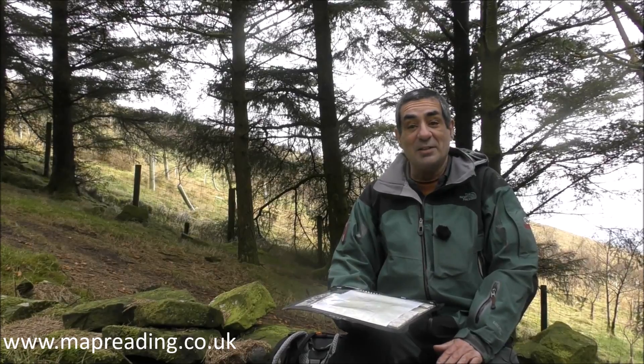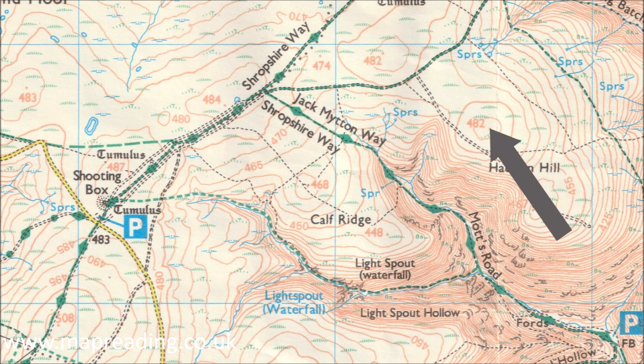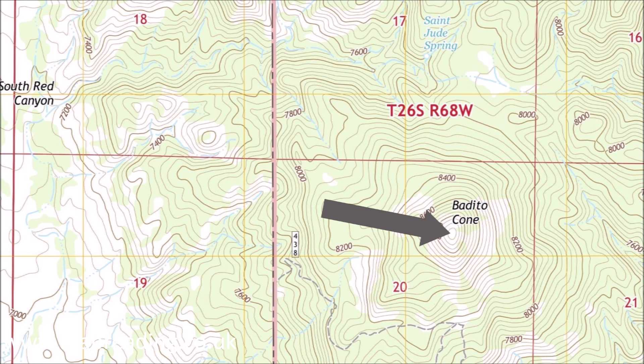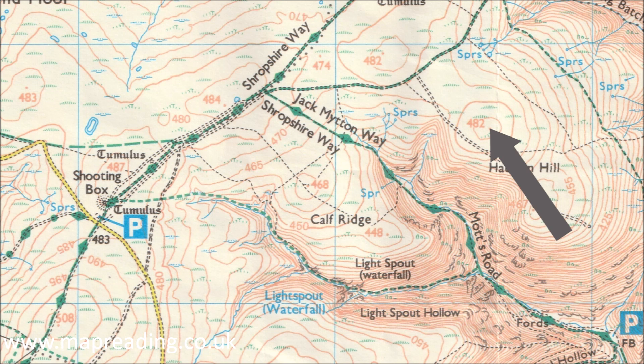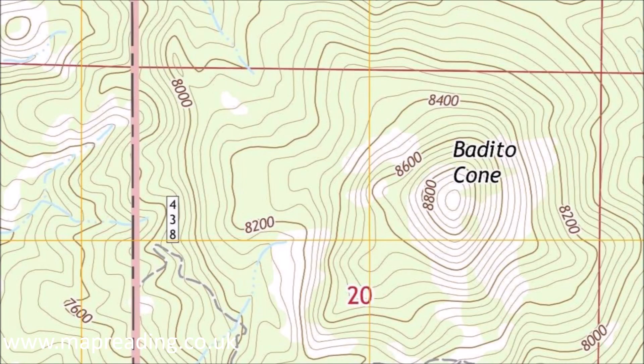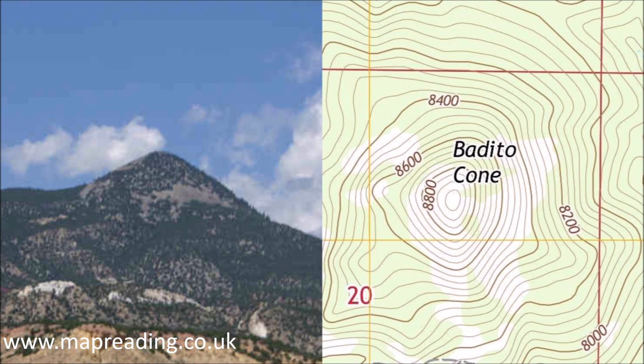Let's say that I want to tell somebody where I am. I'm at spot 482 on the British map and at Bedito Cone on the American map. There's a problem — on the British map there's another spot 482 only 500 meters away, so I need to identify which one I'm at. Spot, by the way, is just the normal abbreviation of spot height. Similarly, Bedito Cone covers the whole mountain, so I need to specify at least roughly where I am on it.